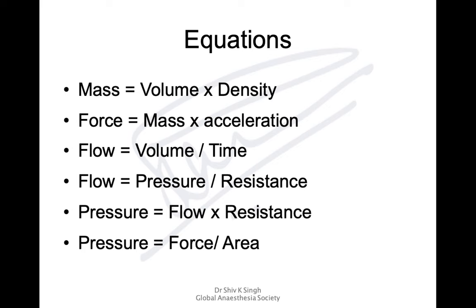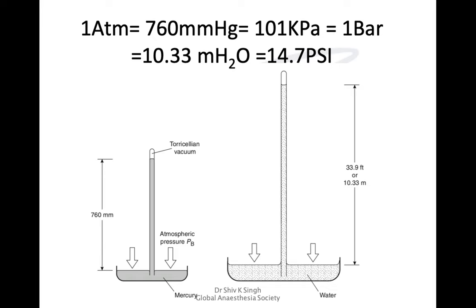The first equation: mass equals volume times density. Force is a product of mass times acceleration. Flow is volume over unit time, but flow is also equal to pressure over resistance. Because of this, pressure is a product of flow times resistance. Pressure is also defined as force acting over unit area.